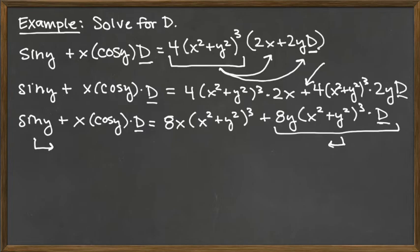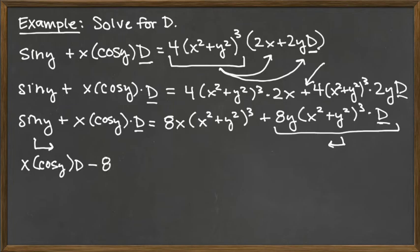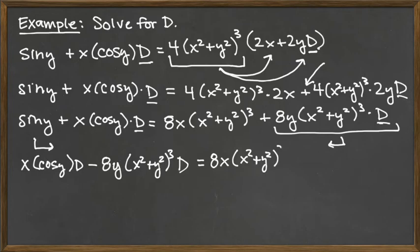I'm going to do both of those movements at the same time. Left over on the left-hand side we've got x times cosine of y times d, and I'm going to bring over the term that starts with 8y. Since on the right-hand side we have plus 8y times some more stuff, we subtract it to move it over — so we have minus 8y times x squared plus y squared raised to the third power times d. And on the right-hand side, we have 8x times x squared plus y squared raised to the third power, and we subtract the sine of y over to the right-hand side.